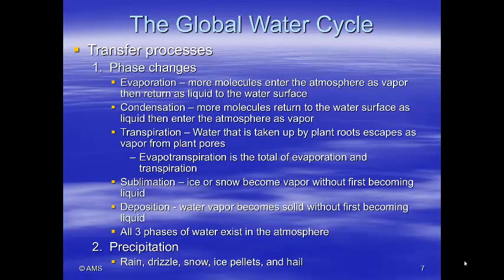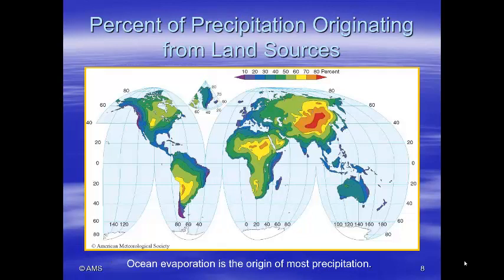All three phases of water exist in the atmosphere. Precipitation comes down as rain, drizzle, snow, ice pellets, and hail. Most of our precipitation comes from the oceans, though if we're far inland, a higher percentage of the rain comes from land sources.